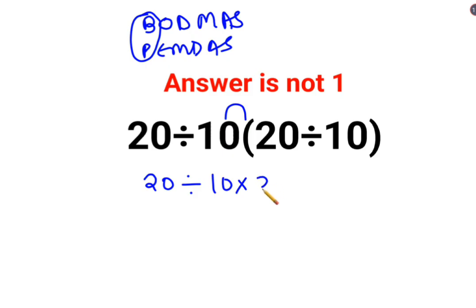20 divided by 10 is 2. At this point, lot of people made the mistake of doing this first. 10 multiplied by 2 is 20. 20 divided by 20, the answer is 1.